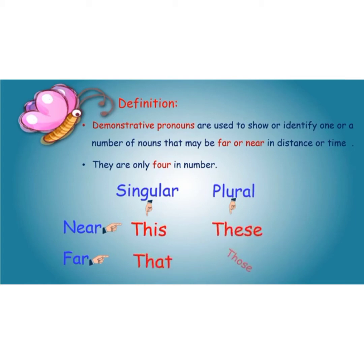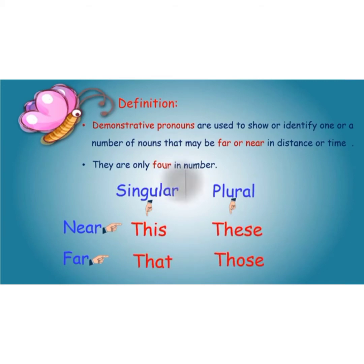For singular, we use 'this' and 'that'. For near, we use 'this'. For far, we use 'that'. For plural, we use 'these' and 'those'.